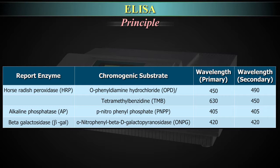For the same reporter enzyme HRP, when the chromogenic substrate is tetramethylbenzidine or TMB, the wavelengths are 630 nm for primary and 450 nm for secondary wavelength. When the reporter enzyme is alkaline phosphatase AP, the chromogenic substrate is PNPP, which is p-nitrophenyl phosphate. Here, the primary wavelength is 405 nm and the secondary wavelength is also 405 nm.